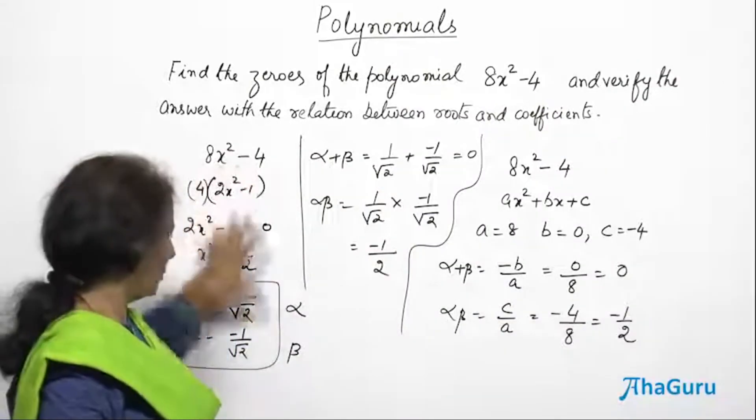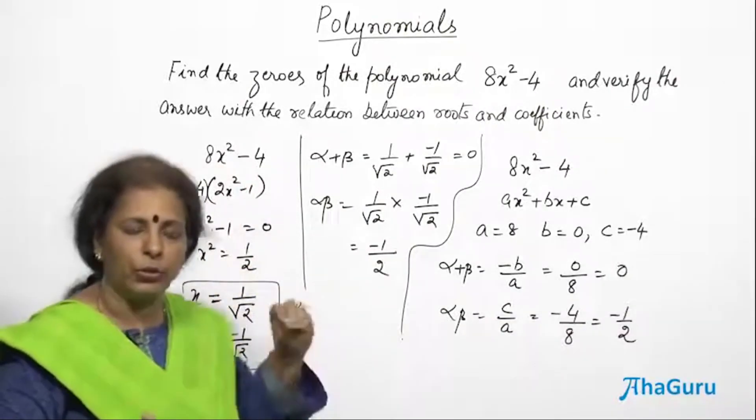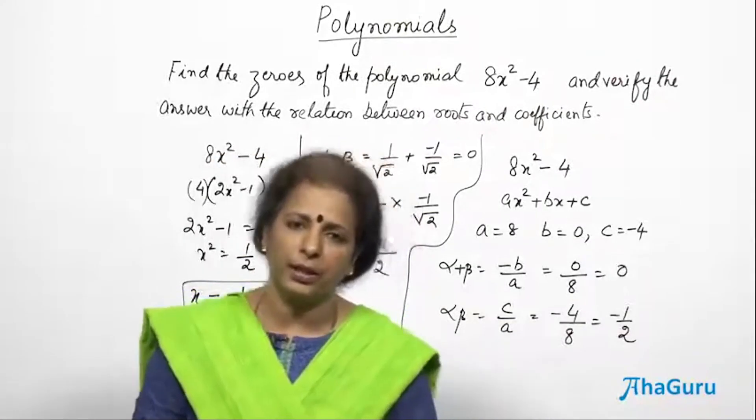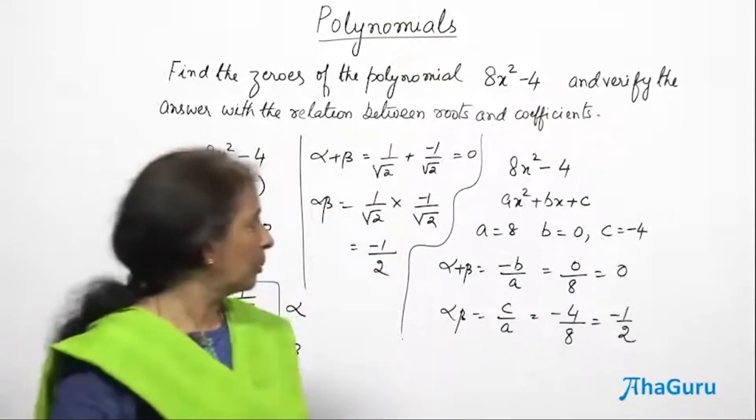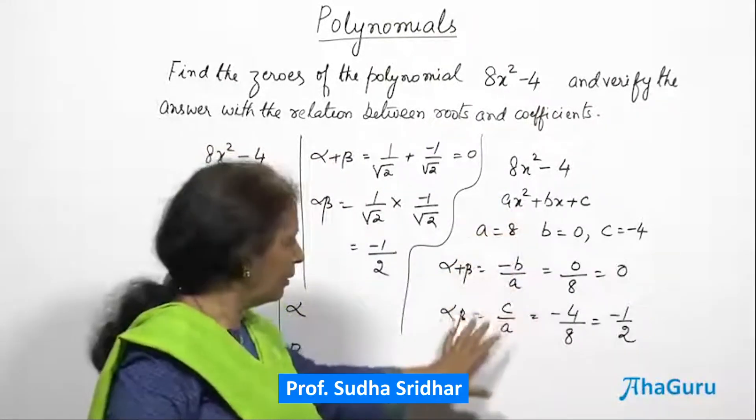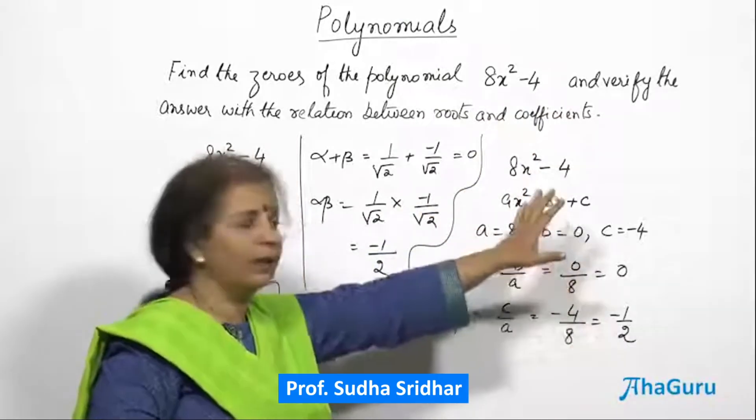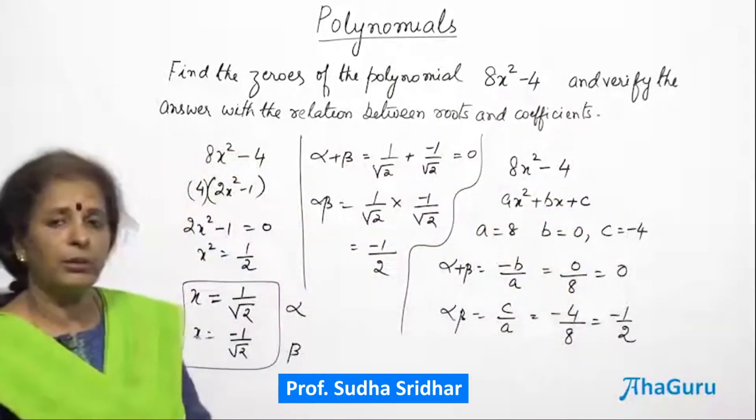So this is a way of checking. You can use this factorization method to find the alpha and beta and you can always check with alpha plus beta and alpha beta whether these values are really the same as what we are getting if you try to find the relationship between the roots and the coefficients.